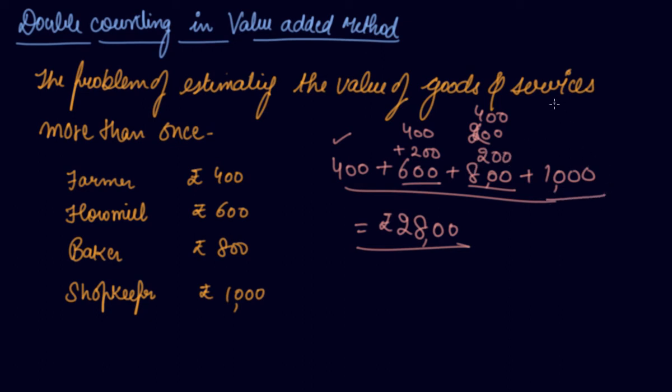Now, in this 1000 Rs., 400 is the value included, 200 is the value of wheat, 200 is the value of flour, 200 is the value of bread, and 200 is the value addition that is made by the shopkeeper.